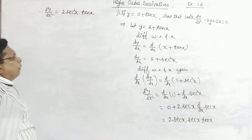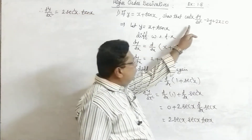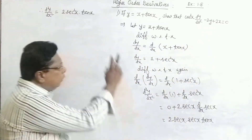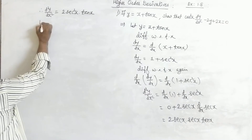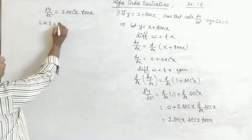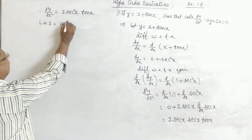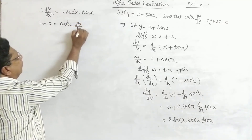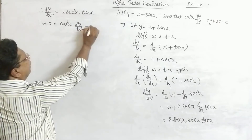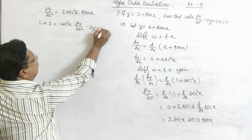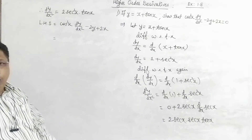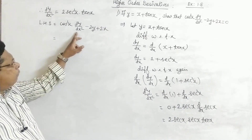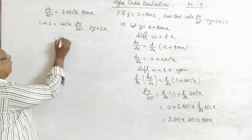But we have to prove cos²x · d²y/dx² minus 2y plus 2x equals 0. Take the LHS: cos²x into d²y/dx², minus 2y plus 2x. Now we substitute the value of d²y/dx² and y.